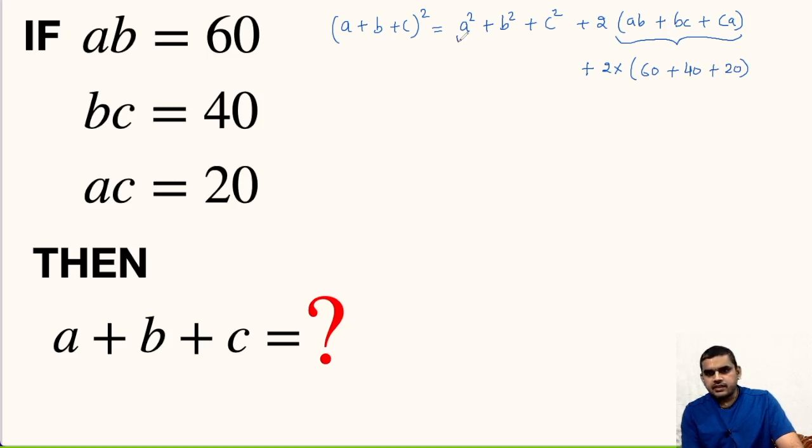Now, if we have the value of A square plus B square plus C square, we can substitute it here and simplify this, take the square root and get the value of A plus B plus C. So for that,